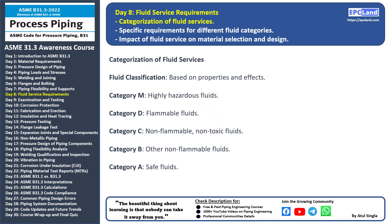Category A: safe fluids with no significant risks are categorized here — these fluids are considered relatively harmless to the piping system. Understanding the categorization of fluid services is essential to ensure that the right precautions are taken during the design, construction, and operation of piping systems. In our next topic, we'll dive into the specific requirements for different fluid categories.